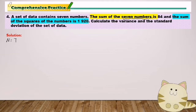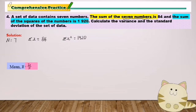The sum of the 7 numbers is 84, so sigma x equals 84. And the sum of the squares of the numbers is 1920, so sigma x squared equals 1920. After listing out all the information, now I find the mean.